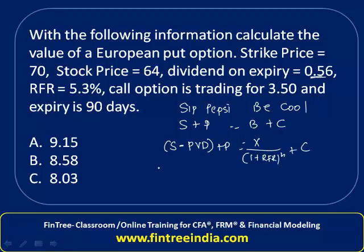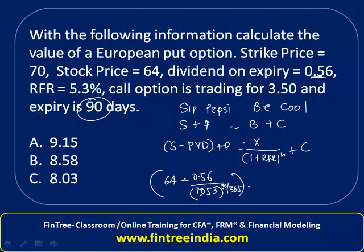Now let's plug in the numbers. Stock price is 64, minus the present value of the dividend: 0.56 divided by 1.053 raised to (90/365). To this we add Put, which we don't know yet. On the right side: strike price 70 divided by 1.053 raised to (90/365), plus the call option value of 3.5.